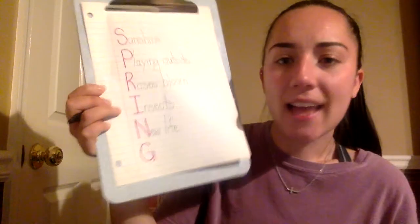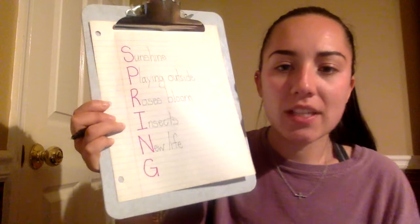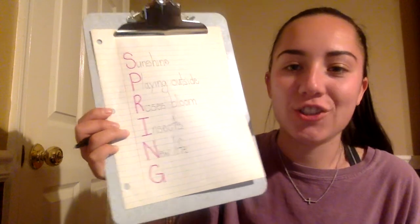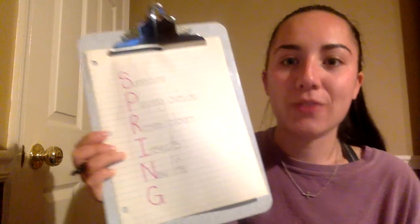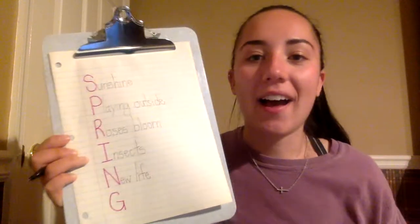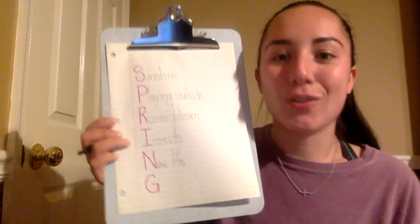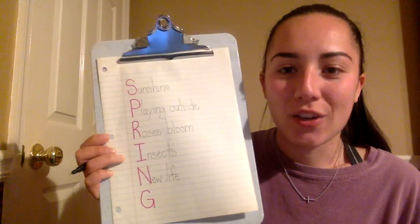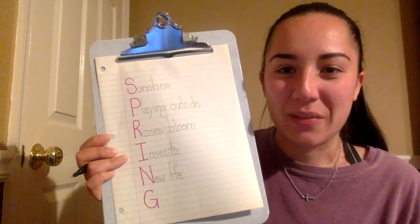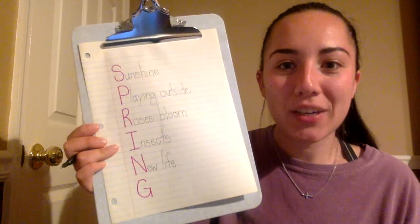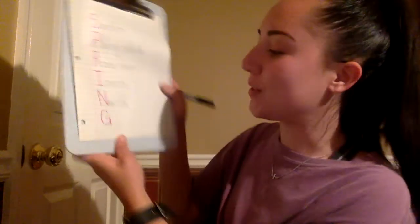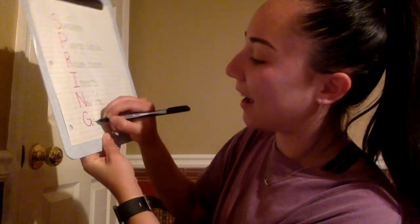Okay, and the last one is the letter G. Something that has to do with spring that starts with the letter G. For me I thought about this one right away — I was going to say green grass. In the winter the grass wasn't very green; it was kind of yellow-brown, and now in the spring it turns green. So I'm going to write green grass.